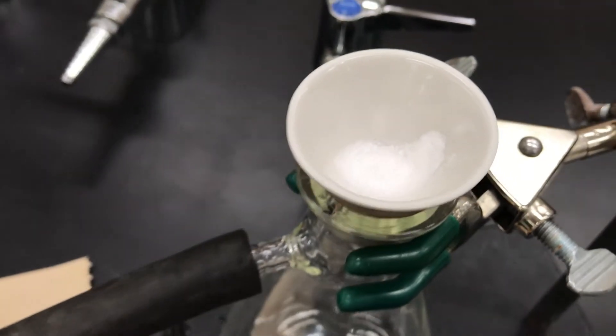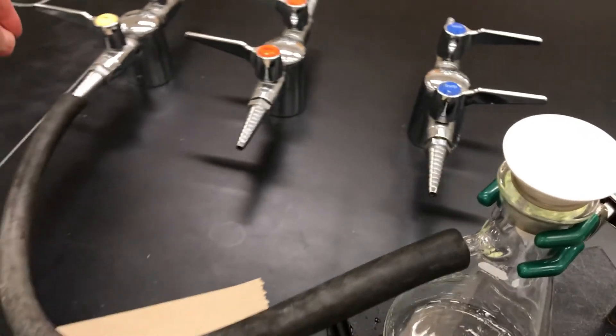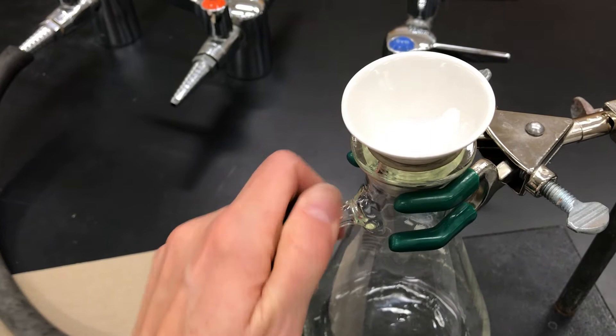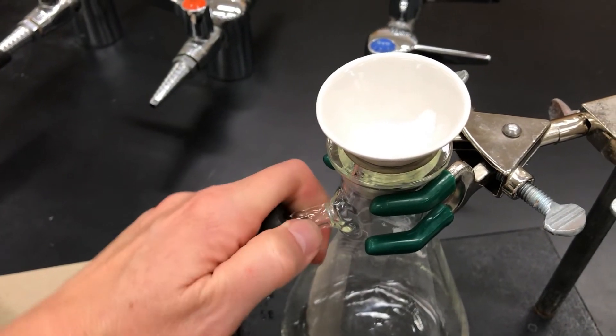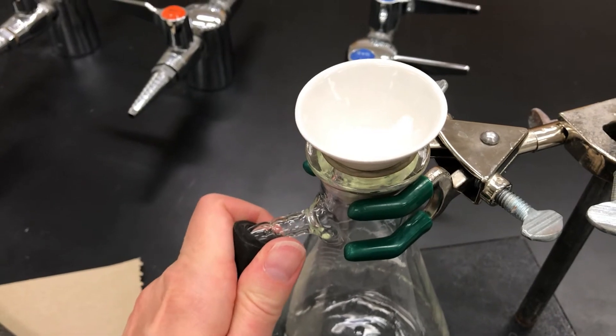When your filtration looks done, you can then turn off the vacuum. Take off the hose to reintroduce the atmospheric pressure into the system. If you wiggle it off, it'll eventually pop off.